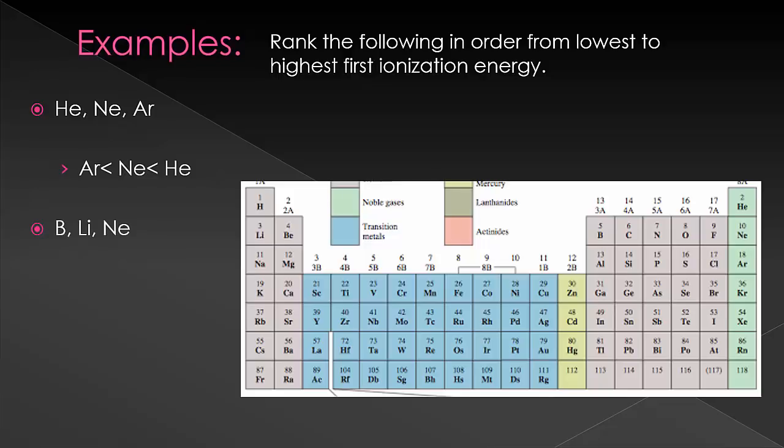Let's look at another one. Boron, lithium, and neon. These are all in one row of the periodic table.